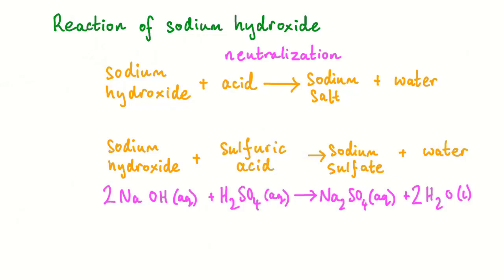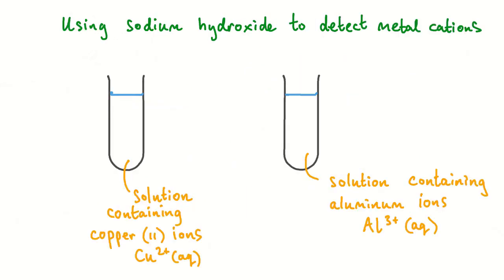In a similar way, if the acid chosen was sulfuric acid, the salt formed would be sodium sulfate. Another interesting use for sodium hydroxide solution is for detecting metal cations in solutions.